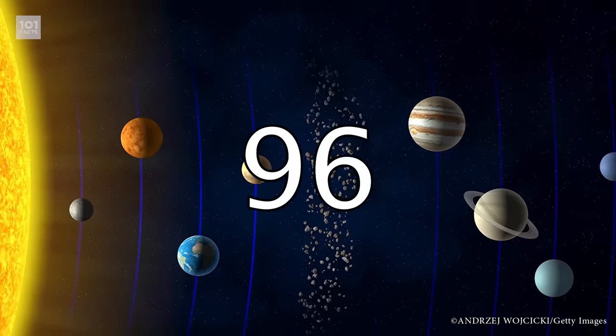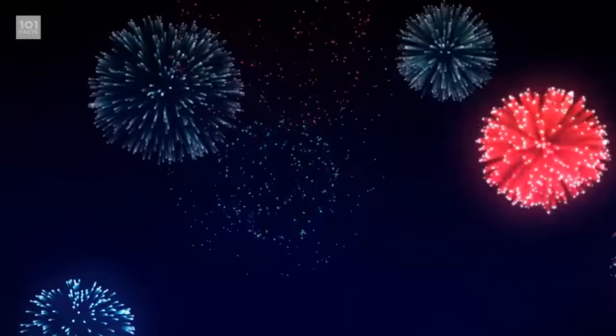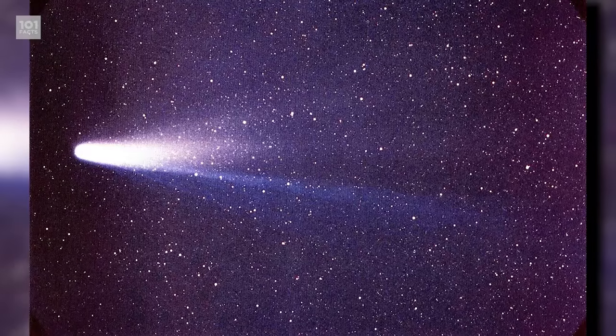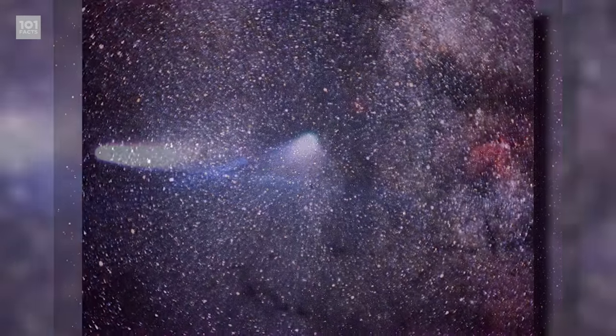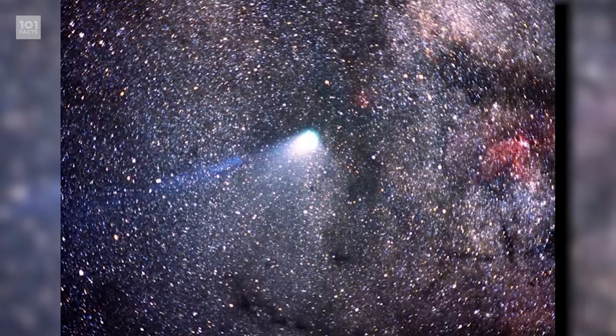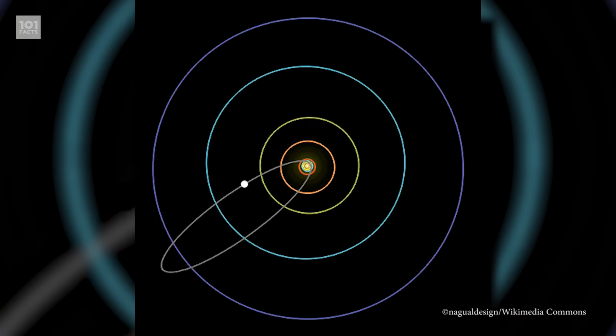Arguably one of the most famous non-planetary objects in the solar system is Halley's Comet. The comet returns to the vicinity of Earth once every 75 years, with its next arrival predicted in 2061. The comet orbits the sun elliptically, like Pluto, though far more dramatically.